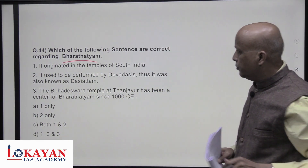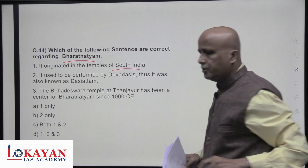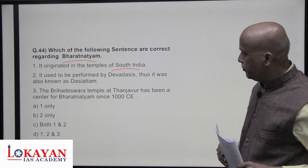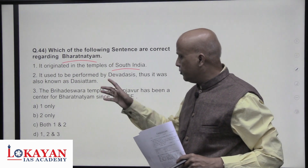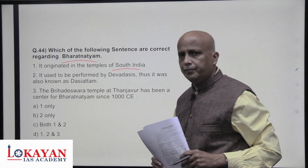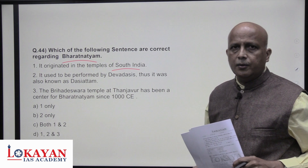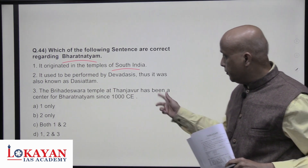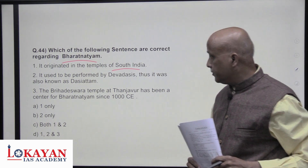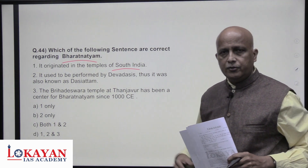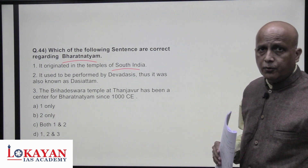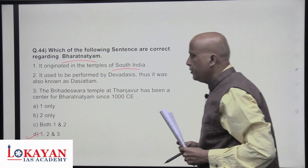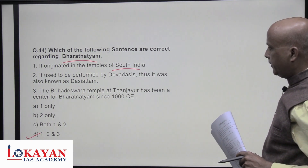Thanjavur has been a center of Bharatanatyam since approximately 1000 CE. It is also called a flame dance and the Thanjavur dance. Thanjavur even today is the cultural capital of Tamil Nadu. All three characteristics are correct — answer is D.